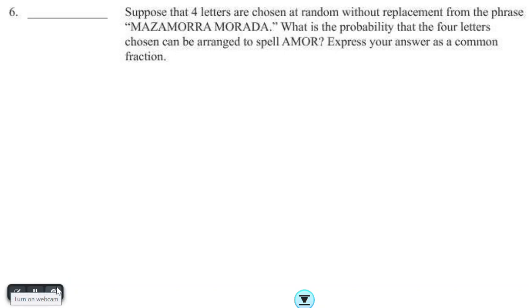We're taking a look at problem number six on the target round of 2023 MathCounts chapter competition. In this problem, suppose that four letters are chosen at random without replacement from the phrase MAZAMORRA MORADA. What is the probability that the four letters chosen can be arranged to spell AMOR? Express your answer as a common fraction.